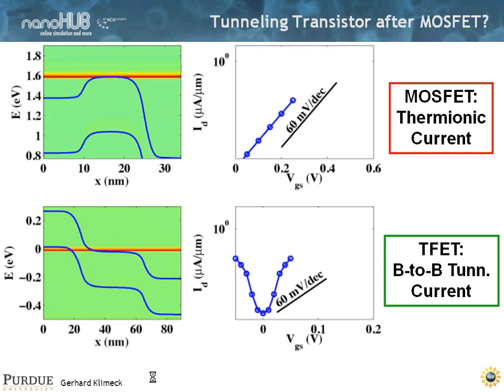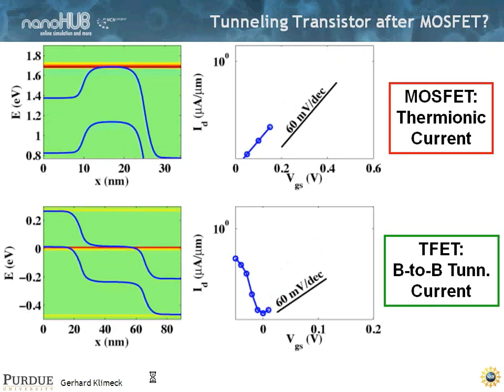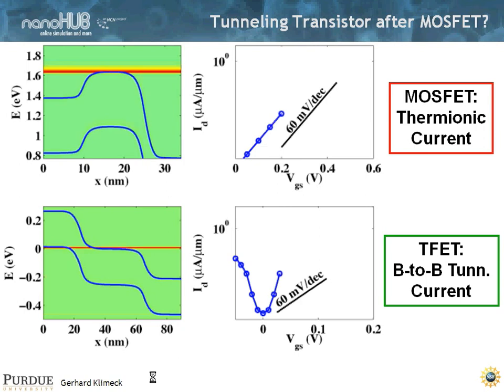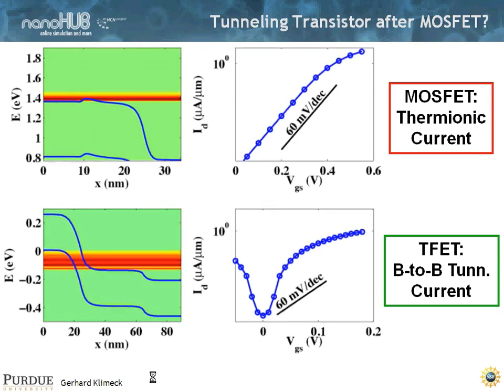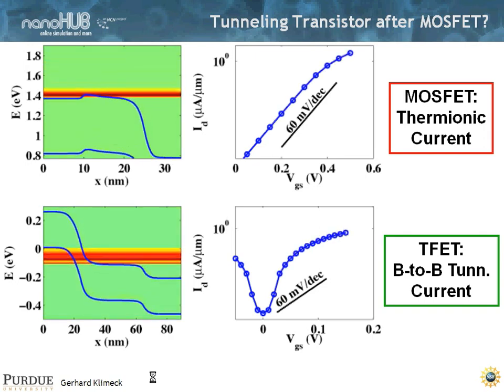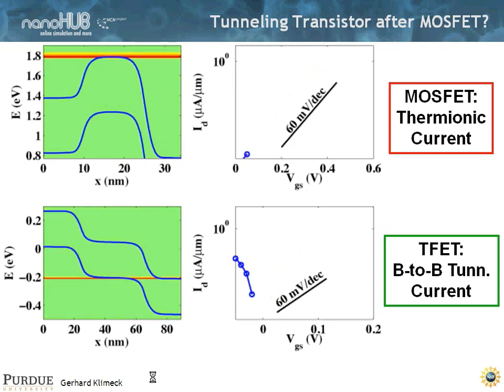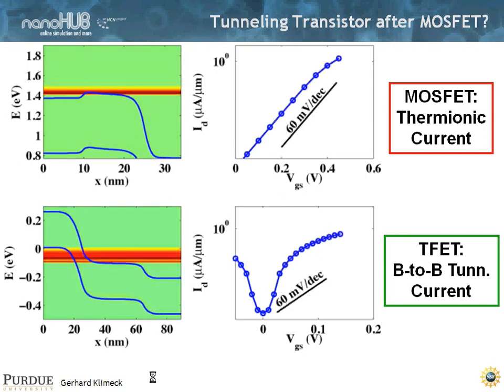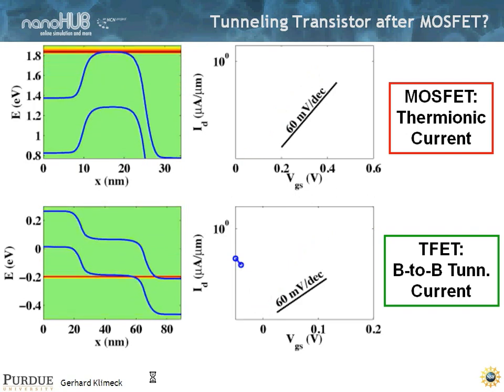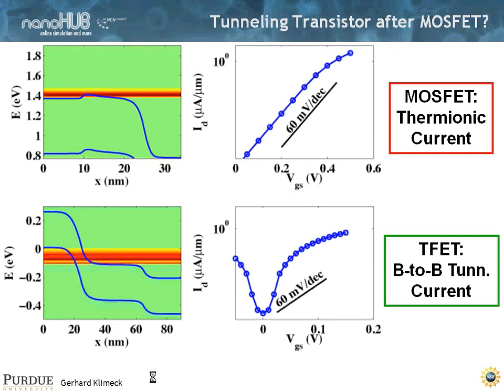Now, in a band-to-band tunneling device, going back, you can actually show that analytically in a MOSFET, the best thing you can achieve is 60 millivolt per decade because it really has to do with a thermionic tail of the distribution of carriers. Now, if you look at a band-to-band tunneling device, you have thermionic tails in the device, clearly, but the current path is really determined by the top of a valence band and the bottom of a conduction band. So you can sort of shut off your thermionic tail by having a presence of a valence band or a conduction band that trims, so to speak, that tail off.